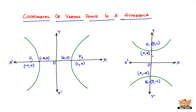The lower vertex is given by (0, −a), because it lies in the negative direction of the y-axis. That ends this video, in which we learned the coordinates of various points on a hyperbola. See you in the forthcoming videos with the standard equations of hyperbola.